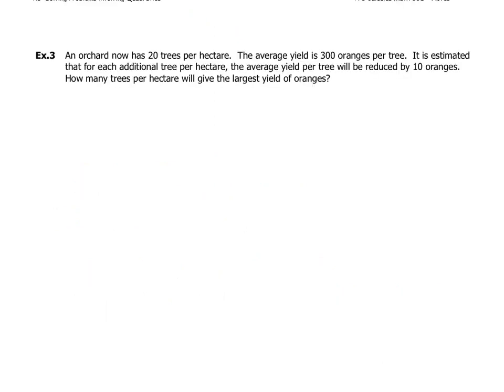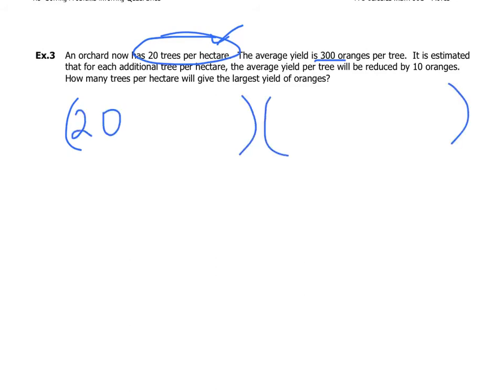This next question doesn't deal with money but it's still a yield-type problem. An orchard has twenty trees per hectare and each tree yields three hundred oranges. It's estimated that for each additional tree per hectare, the yield reduces by ten oranges per tree — likely because resources are reduced and trees have less room to grow.